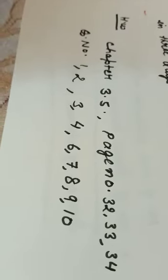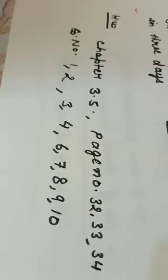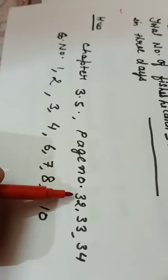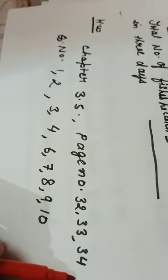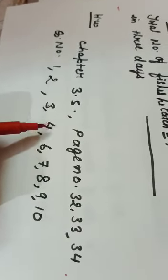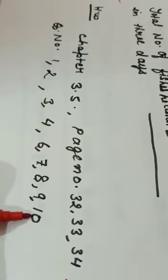So, children, from this explanation, I expect that you can do chapter number 3.5, page number 32, 33, 34, question number 1, 2, 3, 4, 6, 7, 8, 9, 10. Thank you.